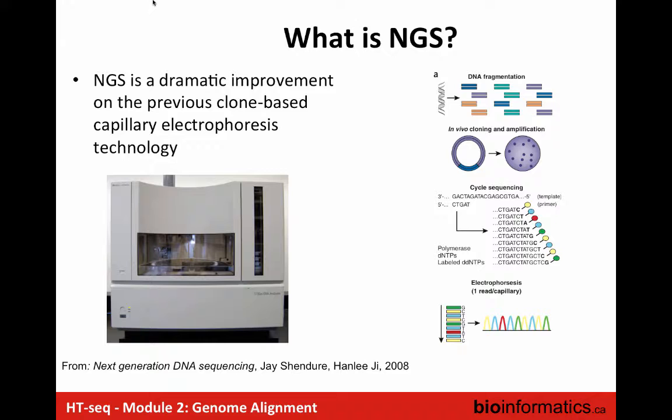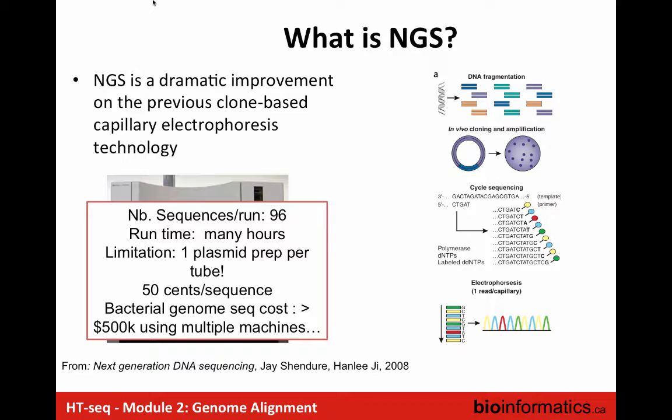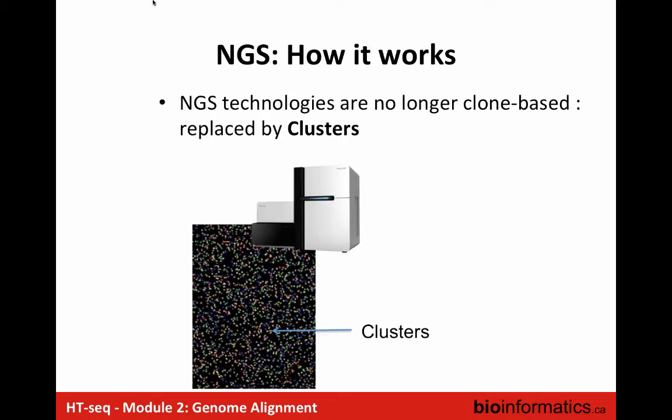Next generation sequencing is an improvement from the first generation, which was based on a clone-by-clone approach. People would take a fragment, put it in a clone, and do sequencing on a capillary sequencer. The main issue with that approach was the number of sequences you could generate per run — only hundreds per run, one sequence per tube, and it was very costly.